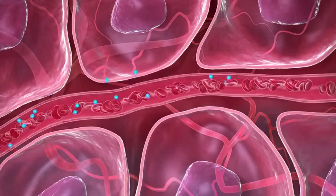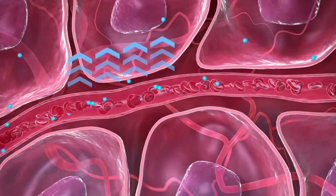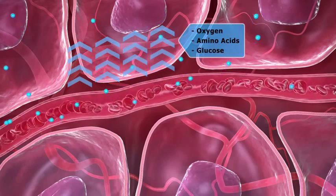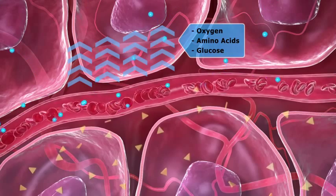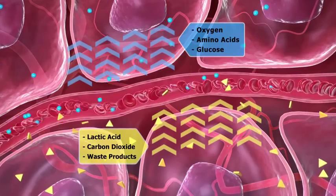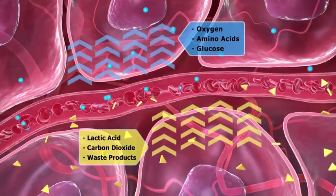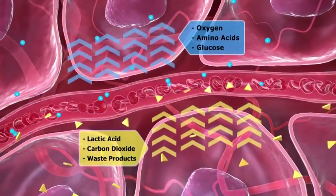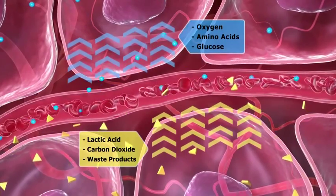Perfusion means that blood is flowing to the tissues to deliver oxygen and nutrients to the cells. This circulation also picks up waste products such as lactic acid and carbon dioxide for elimination from the body. All organs of the body require adequate perfusion in order to function properly.